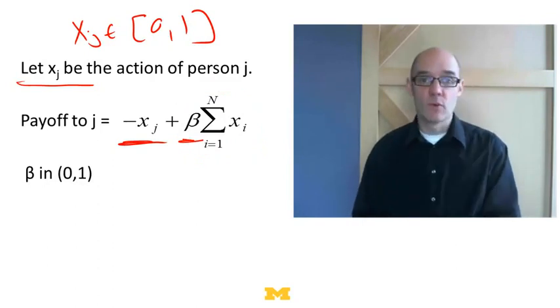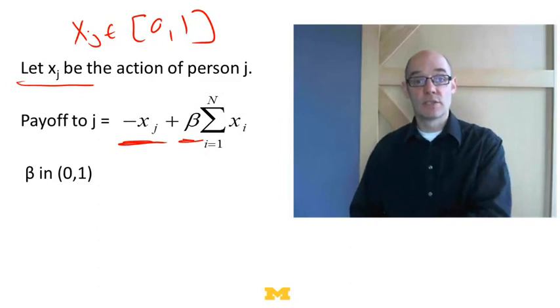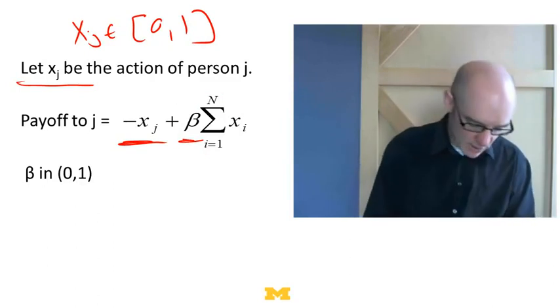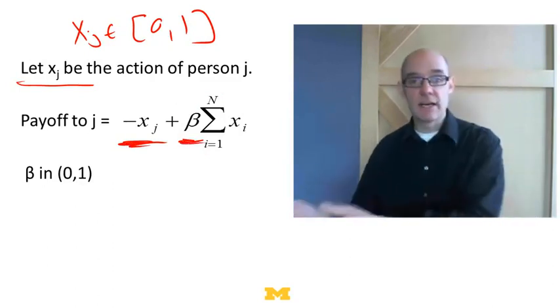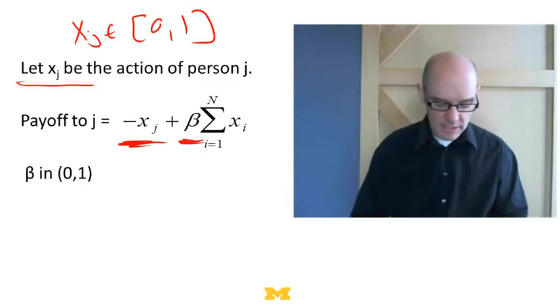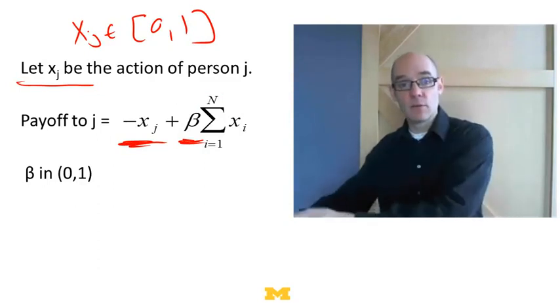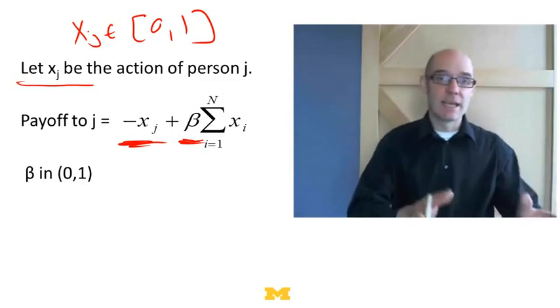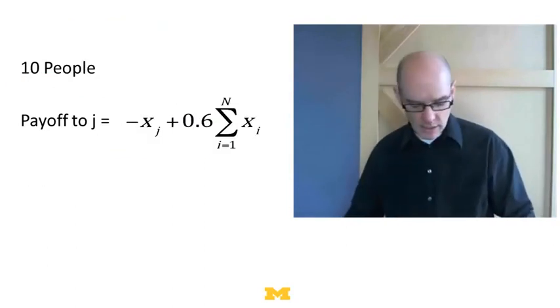Now we assume this term beta is between 0 and 1. If beta were bigger than 1, it would be in my interest to cooperate, because my cost would be minus xj, but then I'd be getting beta times xj, and if beta's bigger than 1, I'd be better off. So we assume beta's in 0,1. So my collective benefit from doing this thing is actually less than my individual cost.